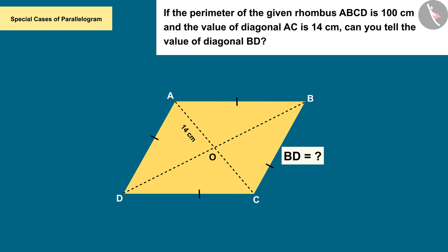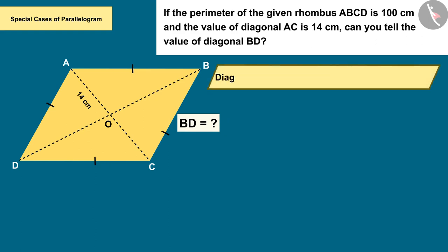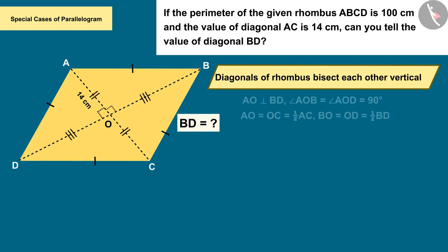In the previous video we learned that both diagonals of a rhombus bisect each other vertically, with the help of which we find the measure of AO, which is 7 centimeters.